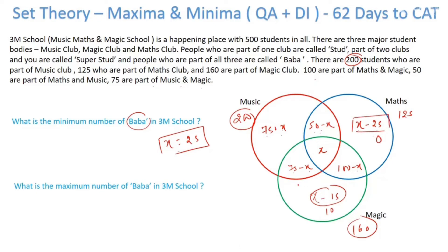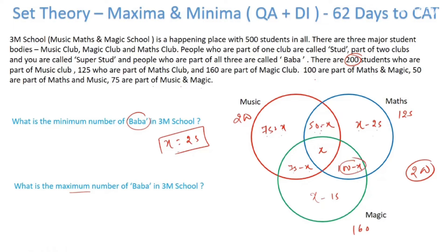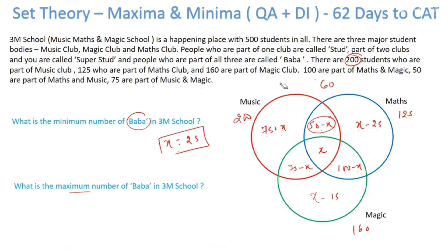So the minimum is x = 25, where x minus 25 becomes 0 and x minus 15 becomes 10 — every number is either 0 or greater than 0. Now, what is the maximum number of baba? Can I take x = 200? No — that makes multiple regions negative. Can I take x more than 50? If I take 60, then 50 minus x becomes minus 10, which is negative. So the maximum value of x is 50. I cannot take more than 50 because that makes the Maths-and-Music region negative.